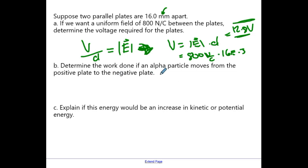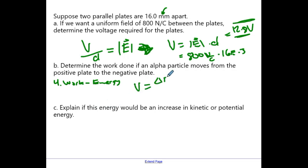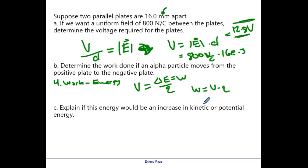Let's determine the work done if an alpha particle moves from the positive plate to the negative plate. Here we're going to use the work-energy theorem: voltage equals change in energy over charge, and the change in energy is work. So if I'd like to calculate how much work I need to do, work equals voltage times charge. Because we're probably looking for energy in joules, I'm going to take my voltage of 12.8 volts and multiply it by the charge of an alpha particle, which is 2 × 1.6 × 10⁻¹⁹ coulombs.